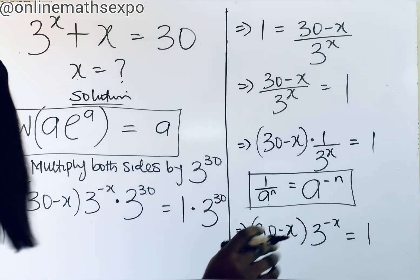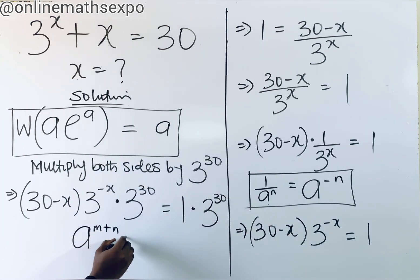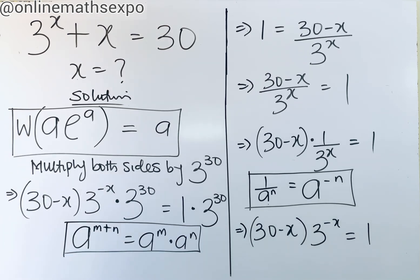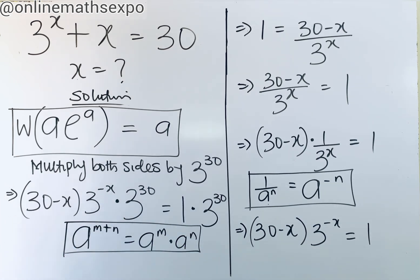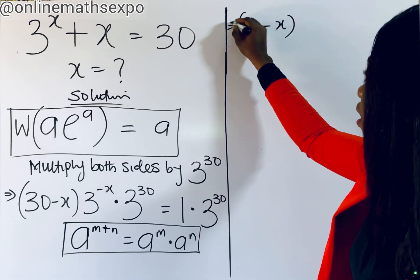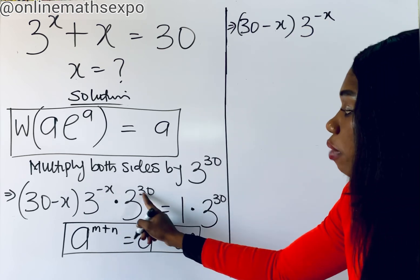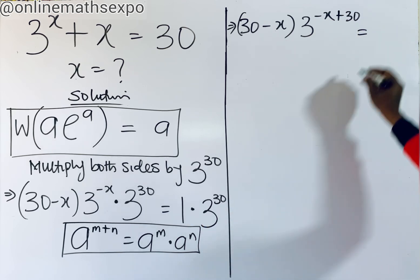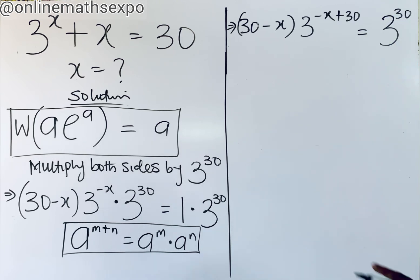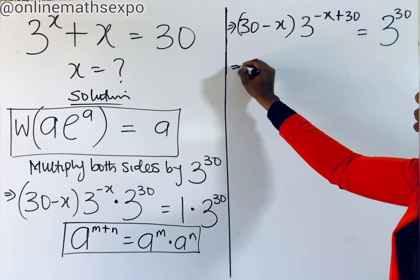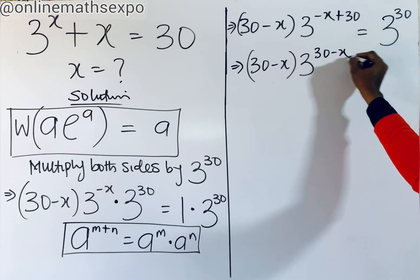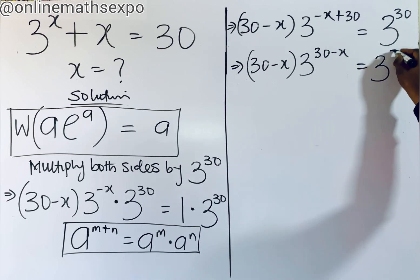Remember that for every a to the power of m plus n, it equals a to the power of m multiplied by a to the power of n. Applying this, we can add the powers on the left side — negative x plus 30 — giving us 30 minus x multiplied by 3 to the power of 30 minus x, equal to 3 to the power of 30.